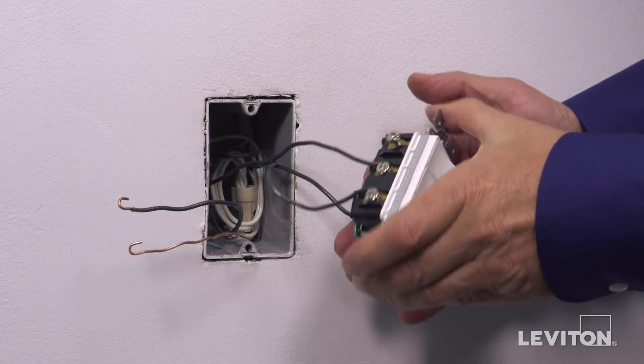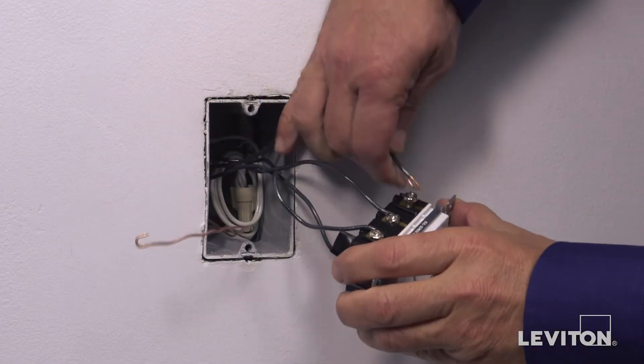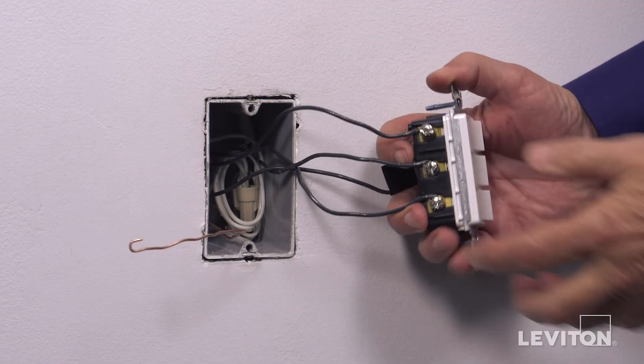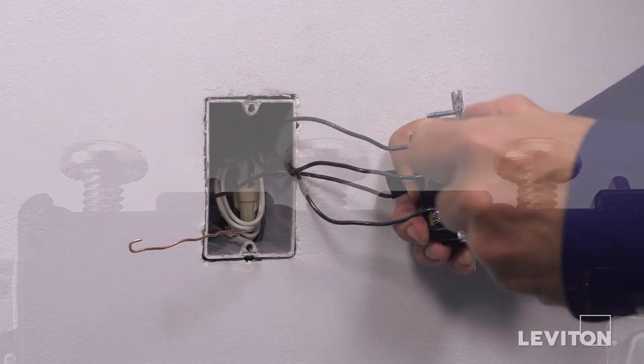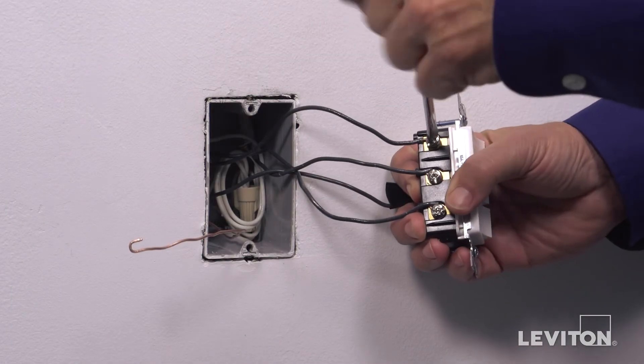Loop the black wall box load wire clockwise three-quarters of a turn around the silver terminal screw. Tighten firmly.